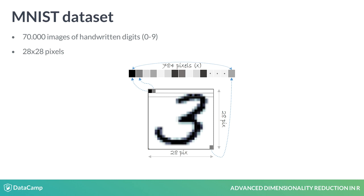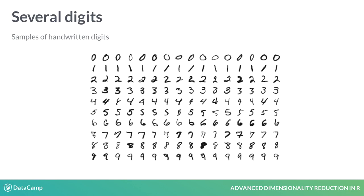Here, you can see more examples of handwritten digits, from 0 to 9. It is clear that, as humans, we have several ways to write each digit, and a machine must be able to take all of them into account. As we will see, this is not an easy task.